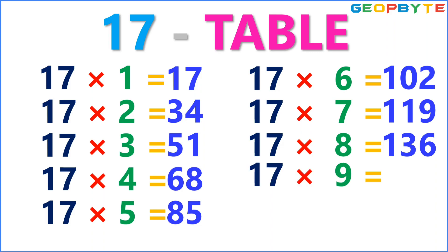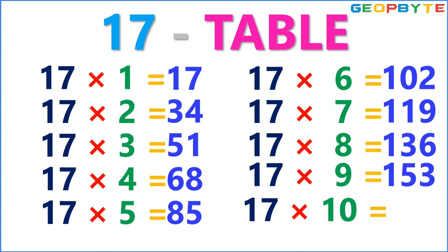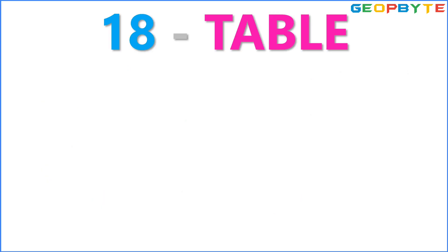17 nines are 153. 17 tens are 170. Now, let us see the 18 table.